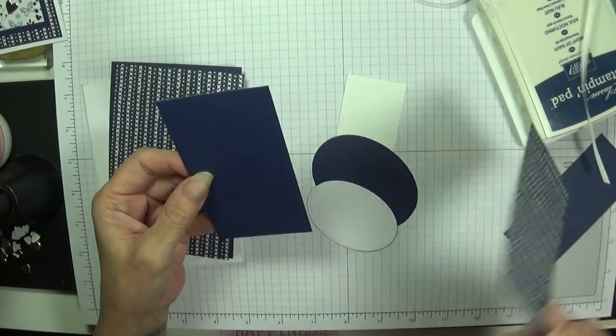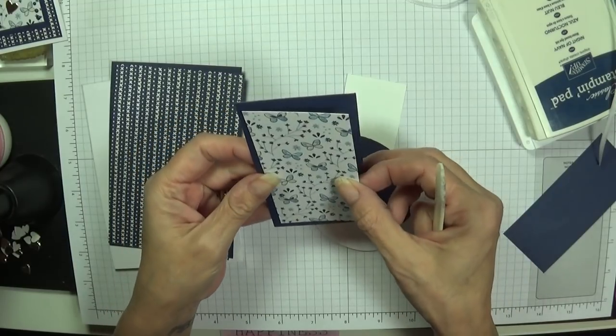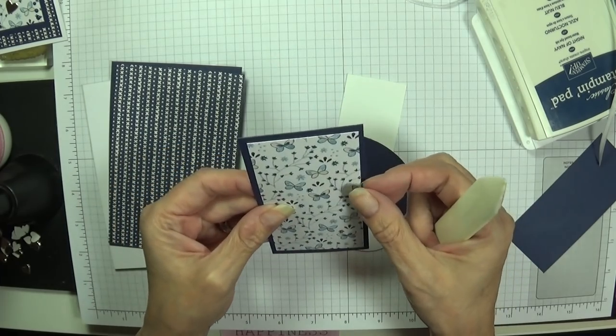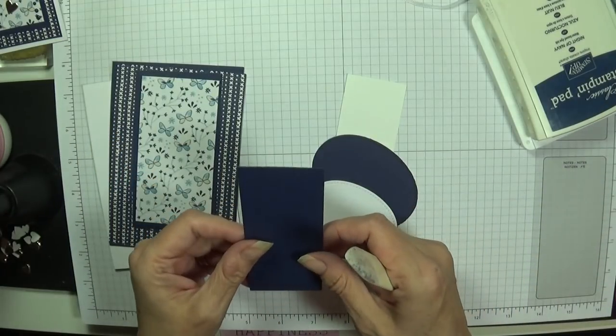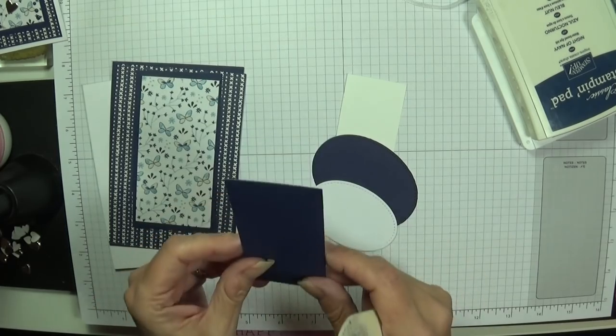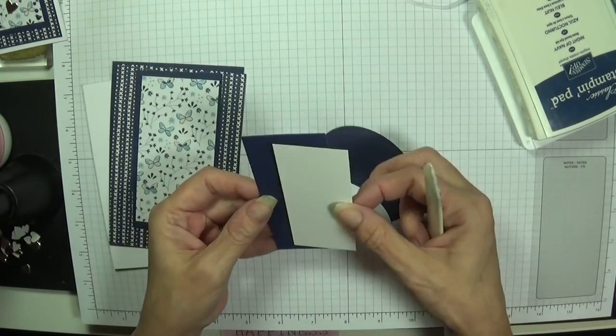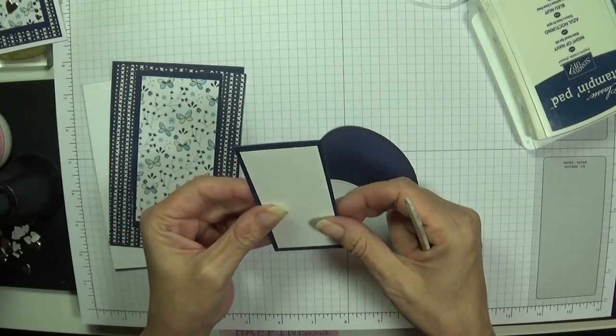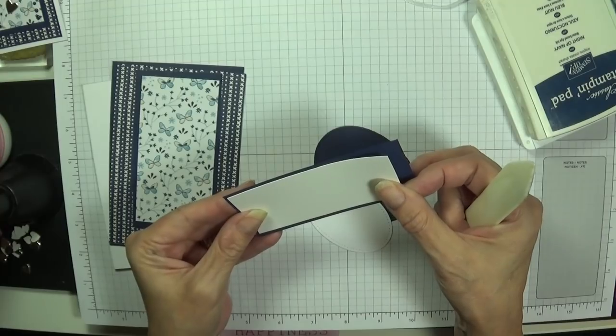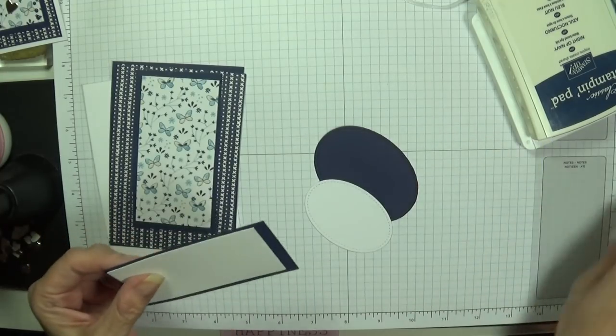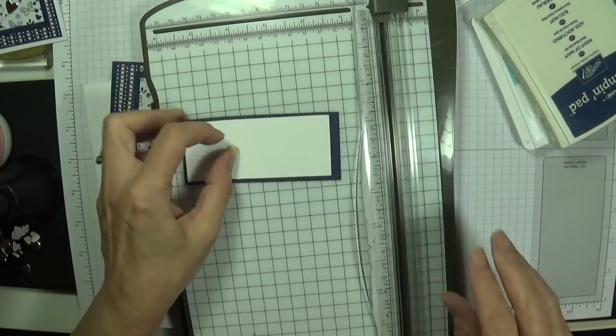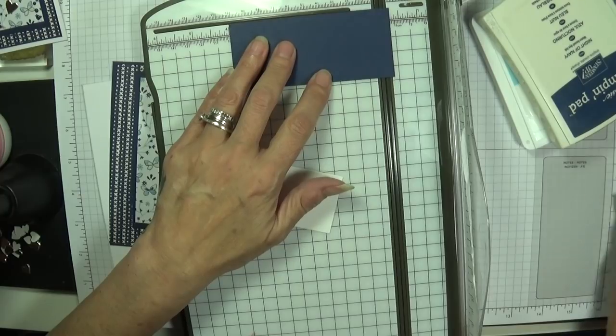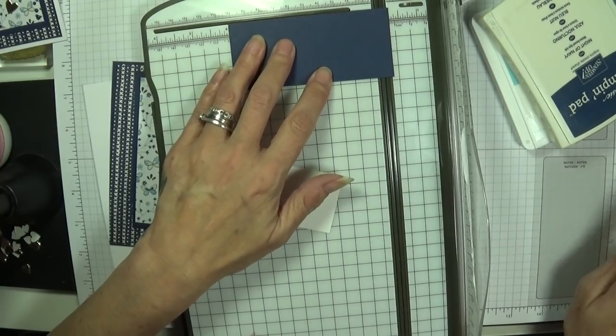Then we've got a piece of Night of Navy. This is three and seven eighths by five and five eighths. This piece is three and three quarters. It's only giving me a fraction of a border all the way around. But it just gives me a tiny little border all the way around. And that is three and three quarters by five and a half. Then our large piece is four and three quarters by two and a half. And this is four and three eighths by two and a quarter.